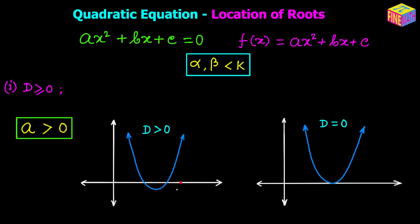In the diagram, I've located the point k at (k, 0) on the x-axis. For both roots to be less than k, k must be on the right-hand side of the parabola. We can guarantee this if k is greater than the x-coordinate of the vertex. The x-coordinate of the vertex is -b/(2a), so condition number 2 is that -b/(2a) < k.